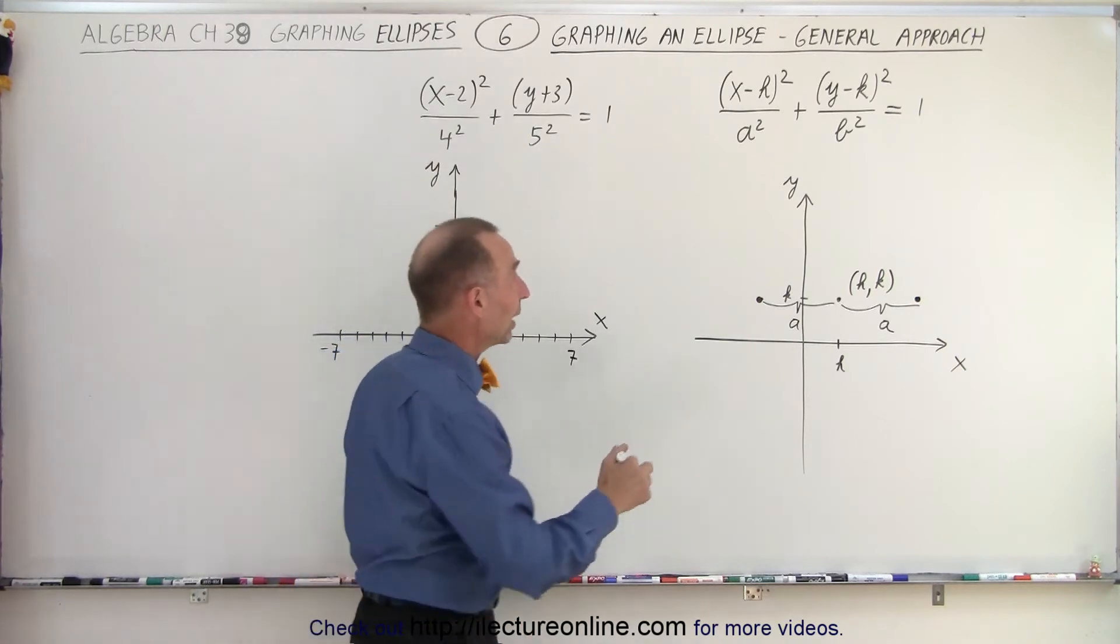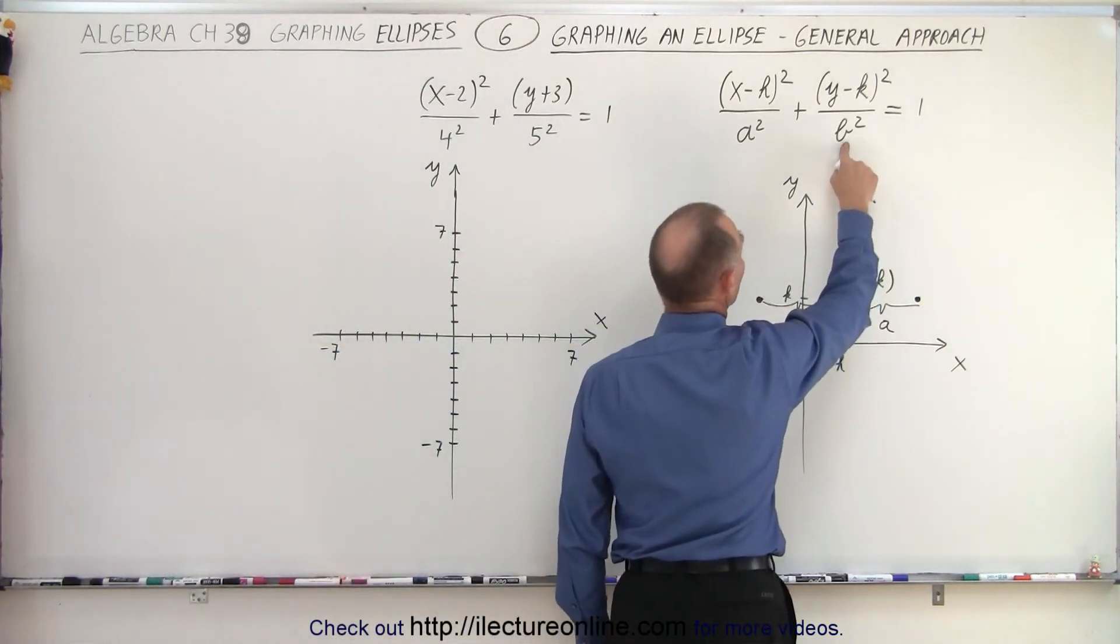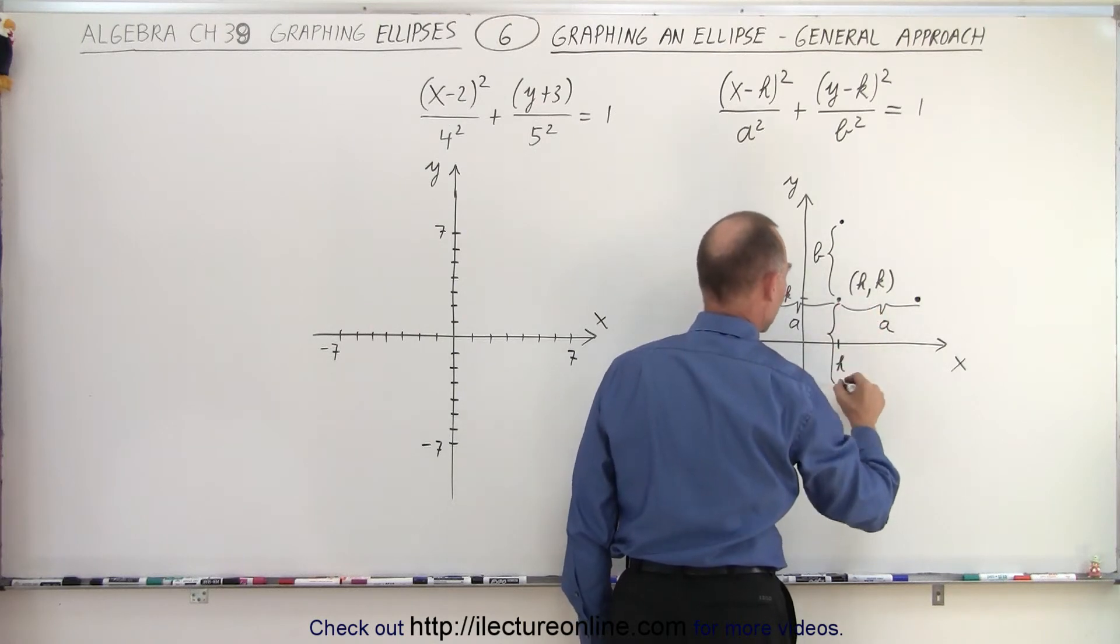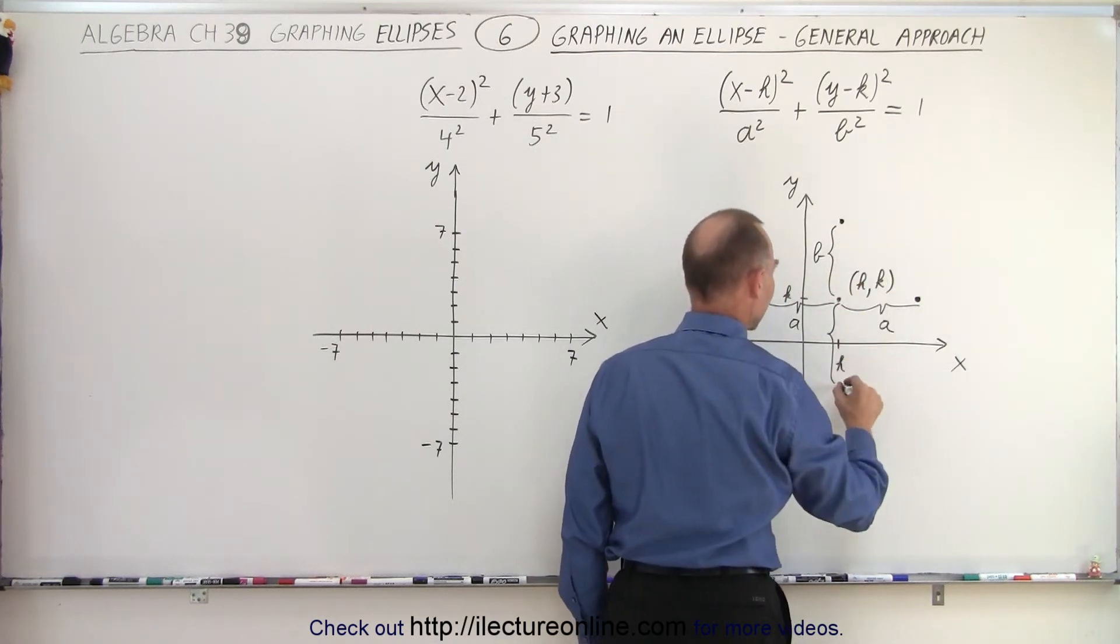And then, in the y direction, notice, we move a distance b up and a distance b down. So if this is b, if this is right here, if this distance here is b, and if this distance here is b as well, that means we end up with two more points, like this.